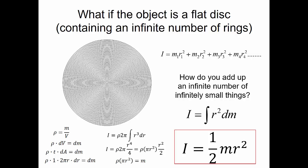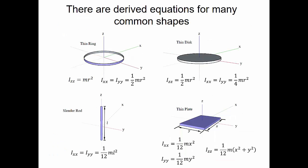There are common shapes for which these equations have been derived. For a thin ring about the Z-axis, the mass moment of inertia is M·R². For a thin disk about the Z-axis, it's one-half M·R². For a slender rod about the Z-axis, because the mass is concentrated around that axis, the moment of inertia is 0. About the X or Y-axis, it's one-twelfth M·L². For a thin plate, the mass moment of inertia about the Z-axis is one-twelfth M times (X² + Y²), where X and Y are the lengths of the rectangle's sides.